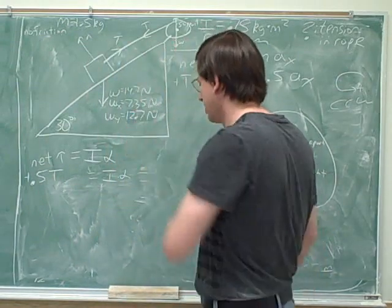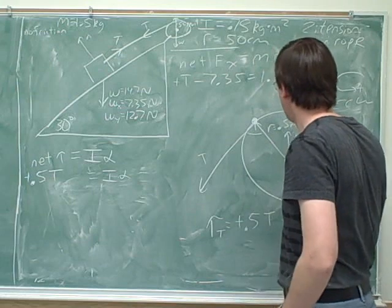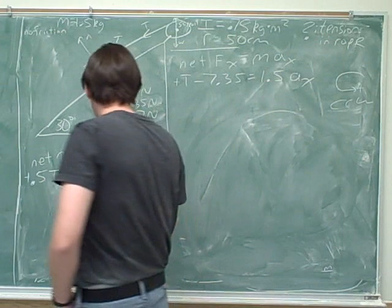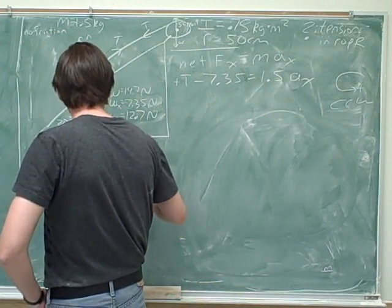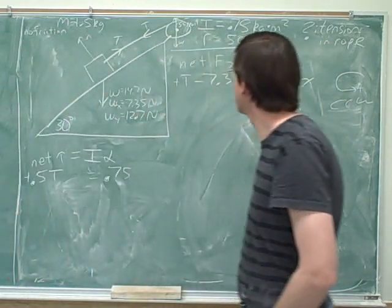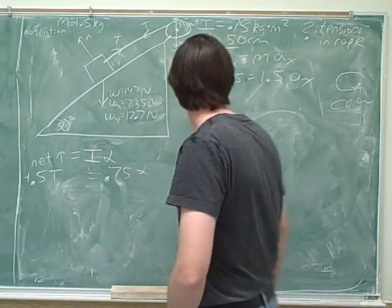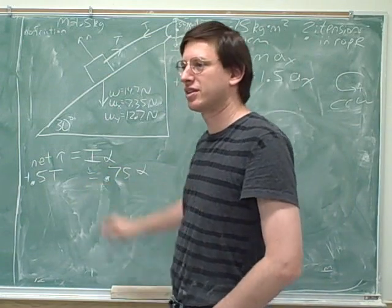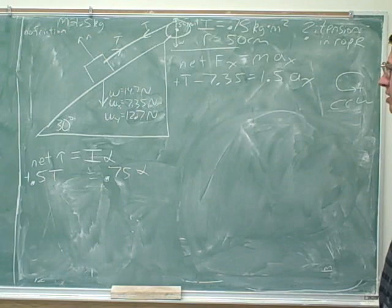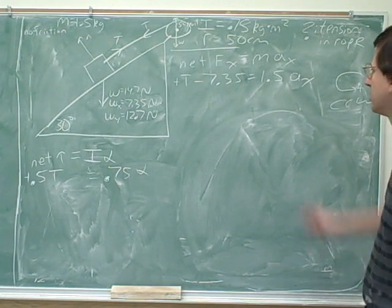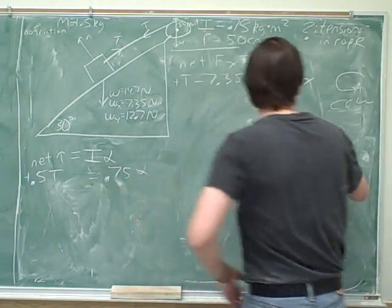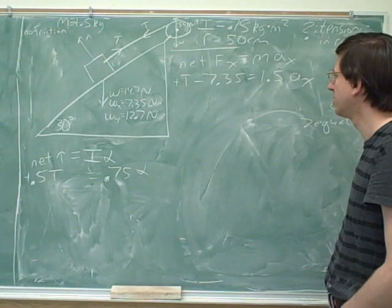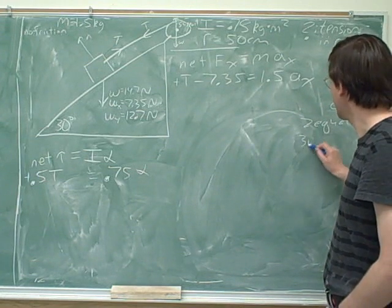Anything else we can plug in here? We have a number for I. Yeah. We might as well plug that in. What was that? 0.75 kilograms meters squared. Okay. So, where are we? We've got this equation and this equation. So, how many equations have we written down? Two. This one and this one. We've got two equations. And how many unknowns are there in those two equations? Three.